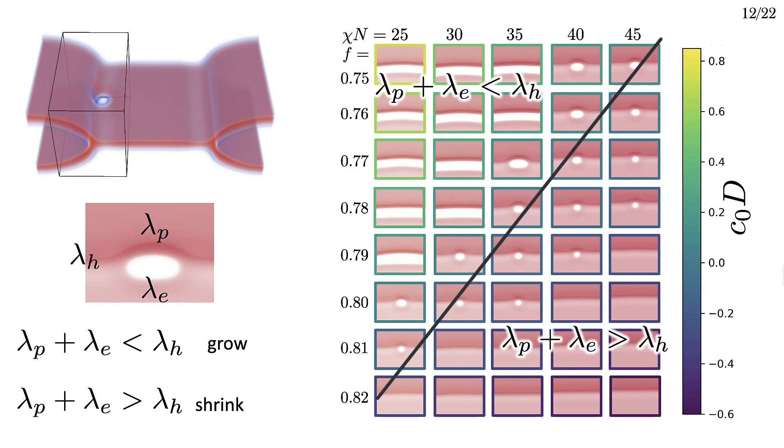I haven't directly shown the line tensions here, but the condition lambda p plus lambda e equals lambda h follows this diagonal nicely. But once again, there's something weird. Right at the diagonal, there's this region where pores get small but don't quite disappear. These are metastable prepores.